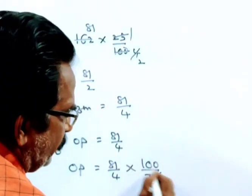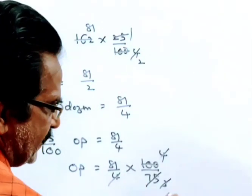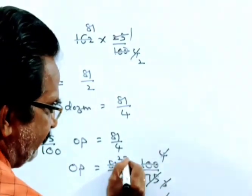And the original price is equal to 81 by 4 into 100 by 75. Friends, 25 3s, 25 4s, 4 4 gets cancelled. 3 is 27, 81.